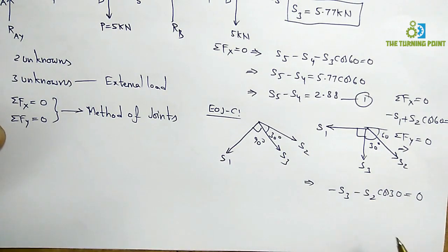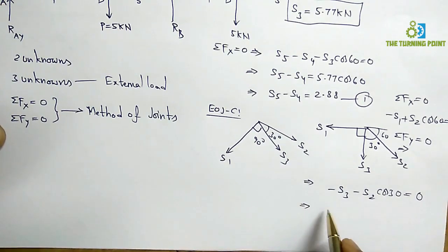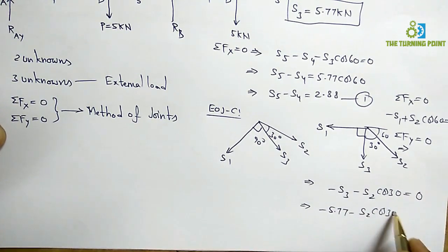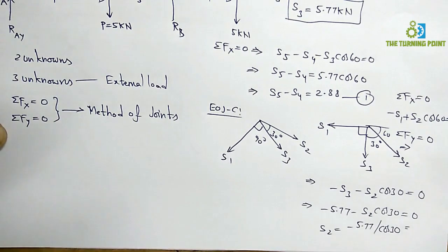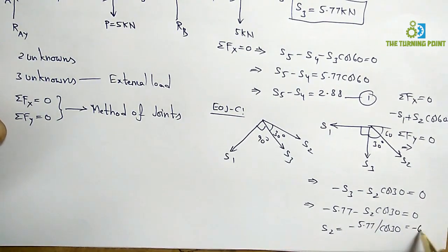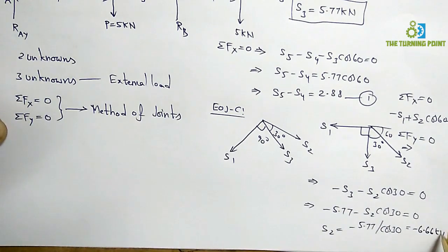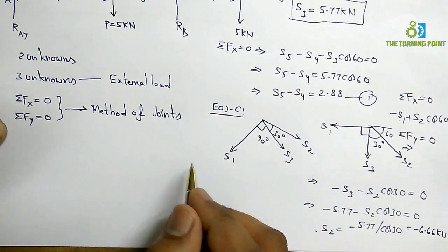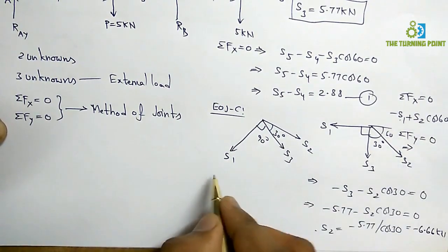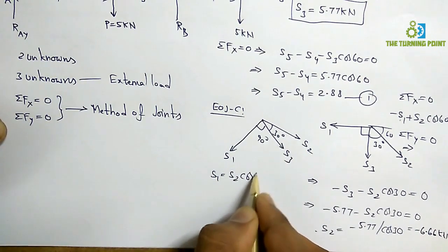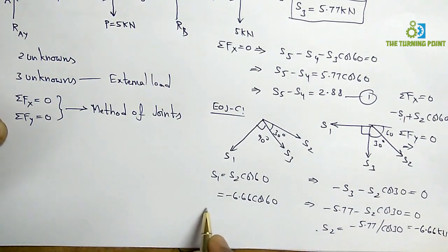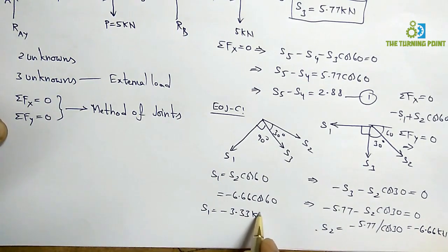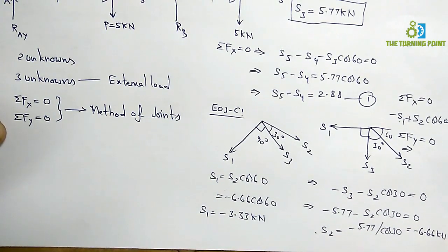Substituting S3 = 5.77 into sigma Fy = 0: −5.77 − S2 cos 30 = 0, giving S2 = −5.77 / cos 30 = −6.66 kN. Then substituting into sigma Fx = 0: S1 = S2 cos 60 = −6.66 × cos 60 = −3.33 kN. S1 and S2 are now solved.